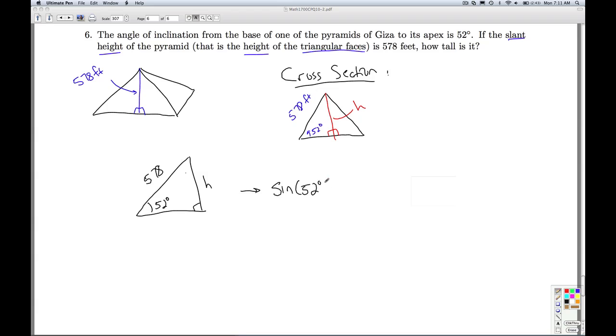The sine of 52 degrees is equal to the length of the opposite side, H, over the length of the hypotenuse, 578. That means that H is equal to 578 times the sine of 52 degrees.